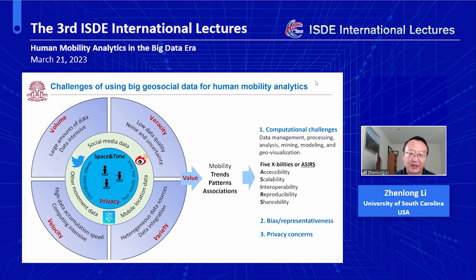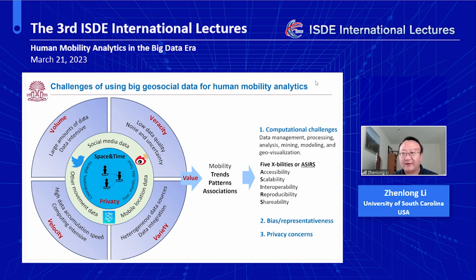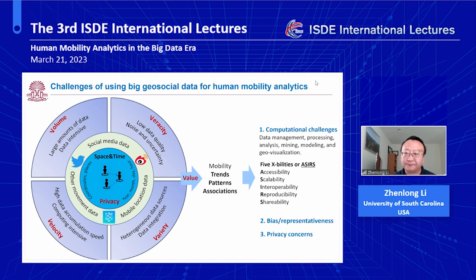These challenges are mainly related to the veracity of the data — low data quality, different from traditional data sources with strong quality control. In a survey, we can design to ensure data represents the whole population. Finally, we have privacy concerns, another big issue when using this data for human mobility analysis, especially when analyzing individual-level data with exact latitude/longitude coordinates.